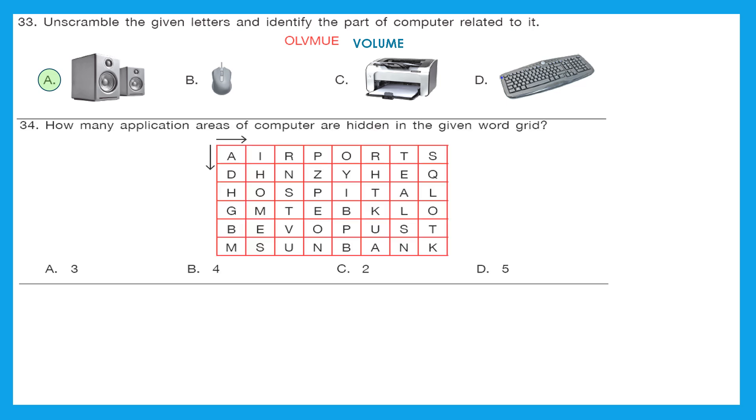Question 34: How many application areas of computers are hidden in the given word grid? Now we have to find the places where computer can be used. So let's find first from left to right and then we will move from top to bottom. In the first row itself we got airport. Let's see next. Oh I got one. In the third row I got hospital. Let's see more. And in the last row we got bank. Now let's move from top to bottom. In the second column and the first one. Yeah we got in the second column home. Let's check rest. No. I think that's all. So we got in total four places or four application areas of computer: airport, hospital, bank and home. The right answer is option B4.